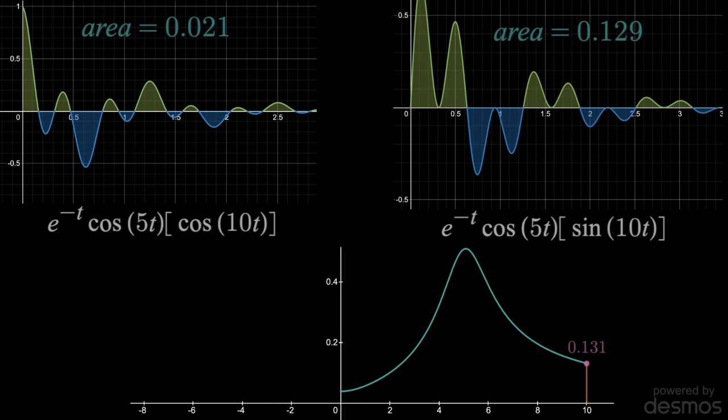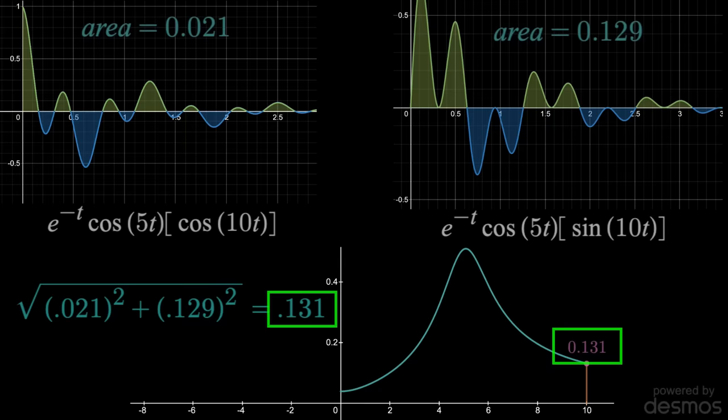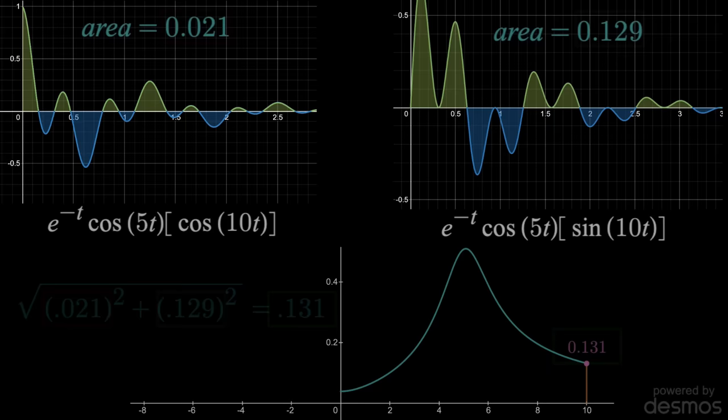For any omega, like 10 in this case, you'll see that the magnitude of those areas is equal to the y-coordinate on the bottom graph at that specific omega. And we see the same thing for negative values of omega, meaning this is the final Fourier transform magnitude.